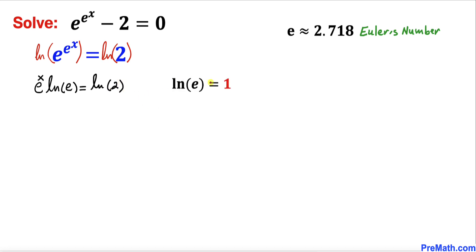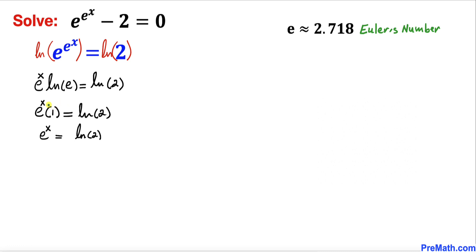Just keep in mind that the natural log of e equals 1. So this ln of e is going to be equal to 1, and e to the power of x times 1 turns out to be simply e to the power of x on the left hand side.